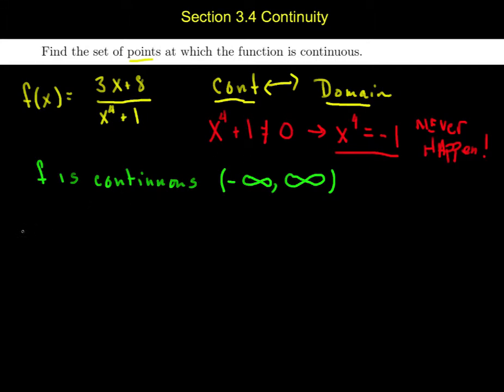How about the function maybe g of x is equal to sine of x all divided by x minus 2. Well I want to know when is this continuous. This really is a matter of talking about when is sine continuous. Well sine's continuous everywhere. We said trig functions are always continuous on their domain. And the domain of sine is all real numbers.